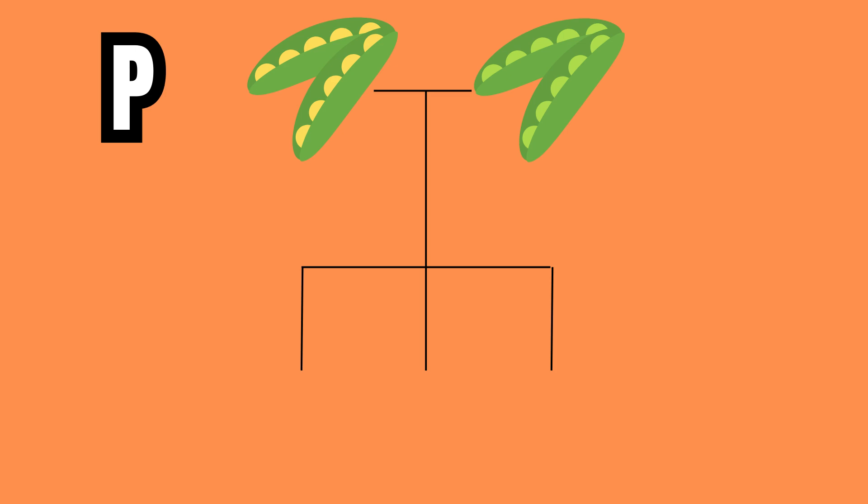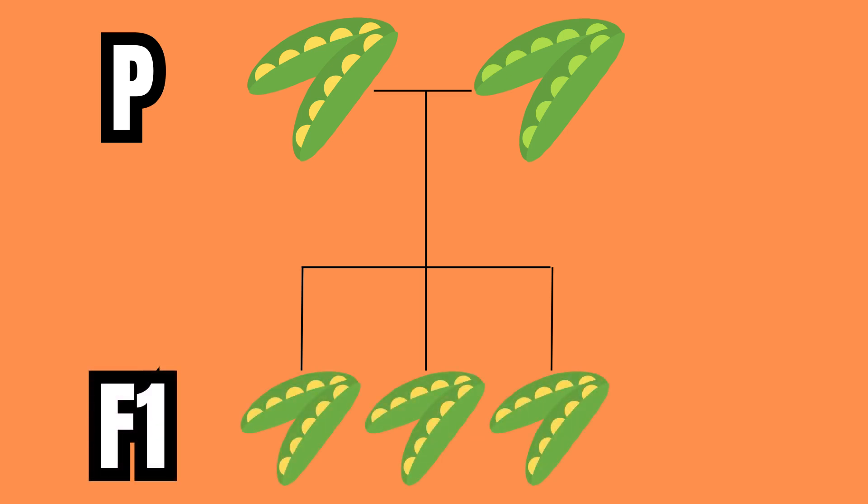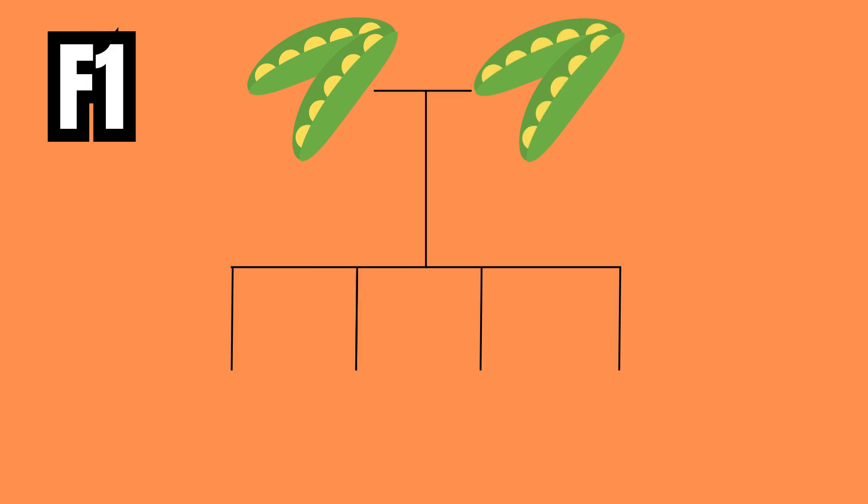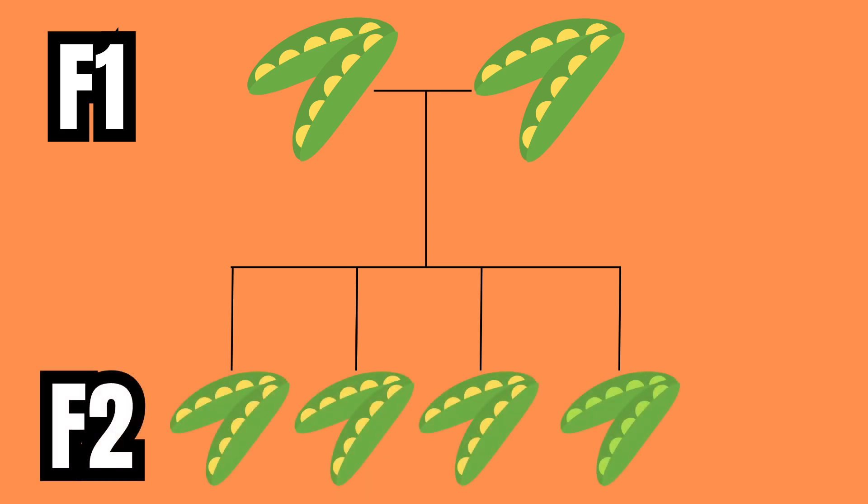When these pure yellow and green peas were crossed, all of their offspring were yellow. What's even more interesting is that when the next generation was interbred, their offspring were 75% yellow and 25% green.